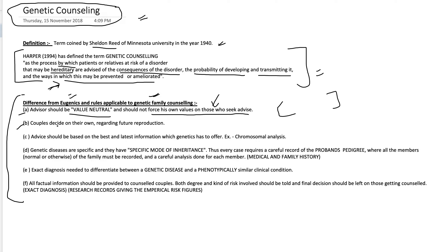As a consequence of being value neutral, the couple should be able to decide on their own regarding future reproduction. The third rule is very important: the advice should be based on the best and latest information genetics has to offer. It must be precise and based on facts and research — for example, chromosomal analysis and other methods of analyzing cells and genes should be utilized before giving any advice.